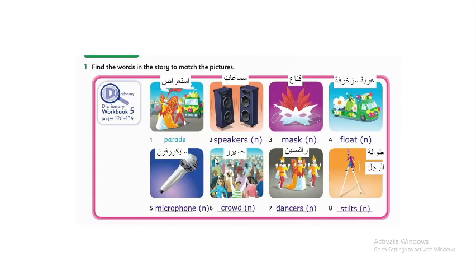Now we're going to discuss the vocabulary. These are the vocabulary words of the unit — you can find them on page 29. We have: parade, which is a noun. Speakers. Masks. Float. Microphone. Dancers. And stilts, which means long poles used for walking tall.